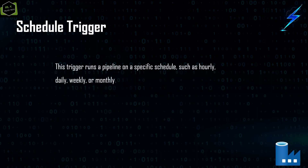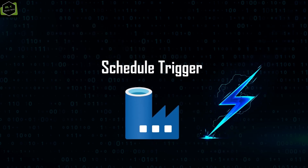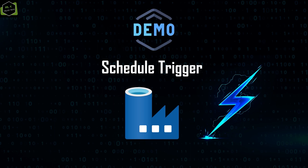So what is a schedule trigger? This trigger runs a pipeline on a specific schedule such as hourly, daily, weekly, or monthly. You can schedule a pipeline to run every day, twice every day, monthly once, or weekly once. You can configure this trigger using the Azure Data Factory Studio. Now let's see how we can configure a scheduled trigger with a demo.